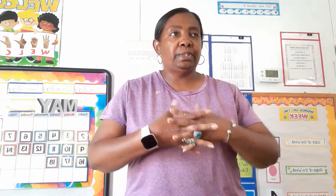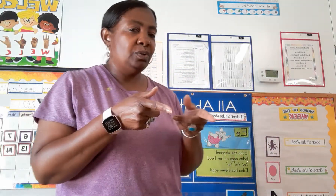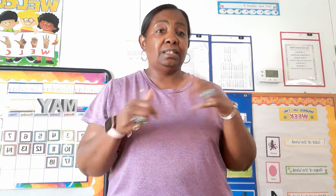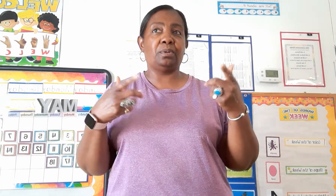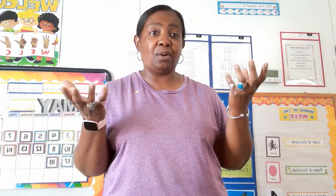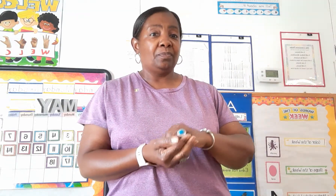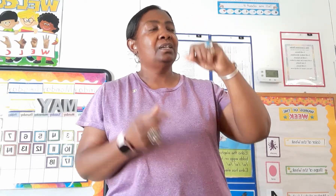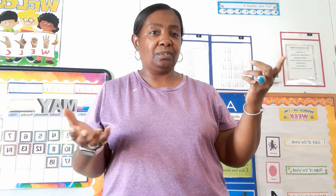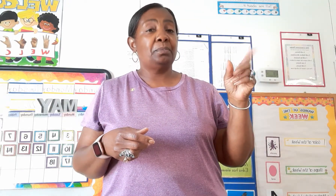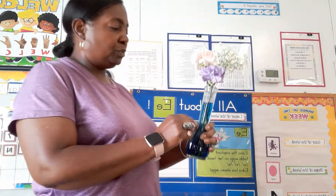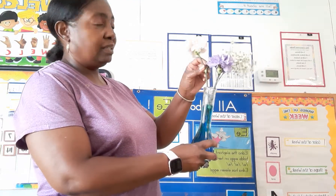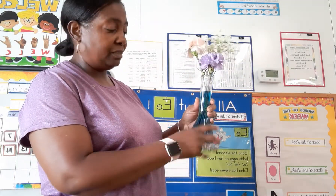Good morning boys and girls! This morning we're going to talk about a little experiment we did earlier about plants. We talked about the parts of the plant — the stem, the leaves, and the flower. The stem sucks up water which goes up to the leaves and into the flower. We put blue food coloring in the vase and we're going to look at this light-colored flower to see what blue tint it gets.